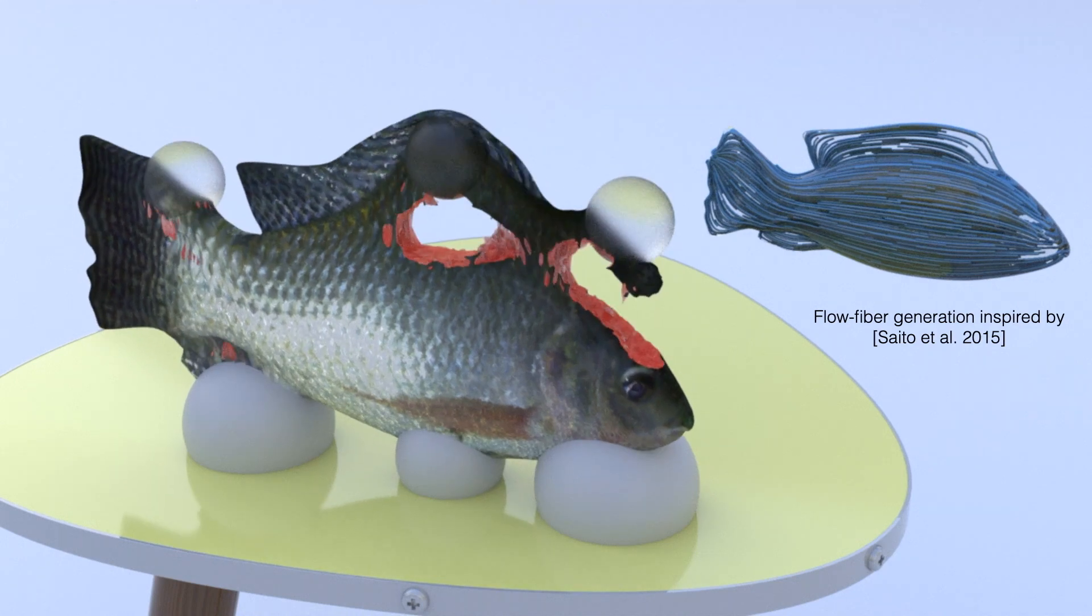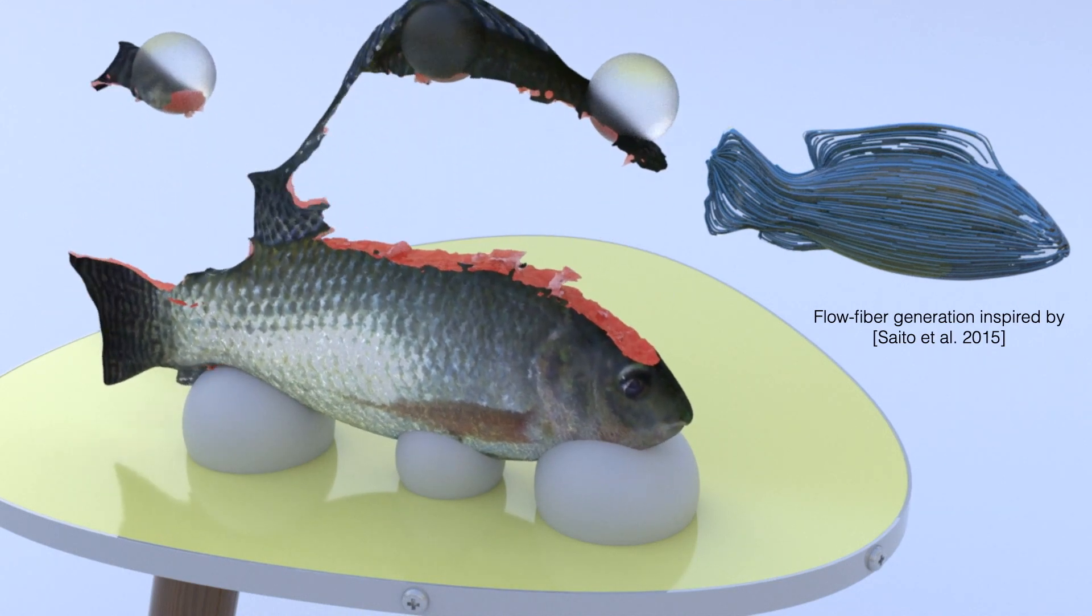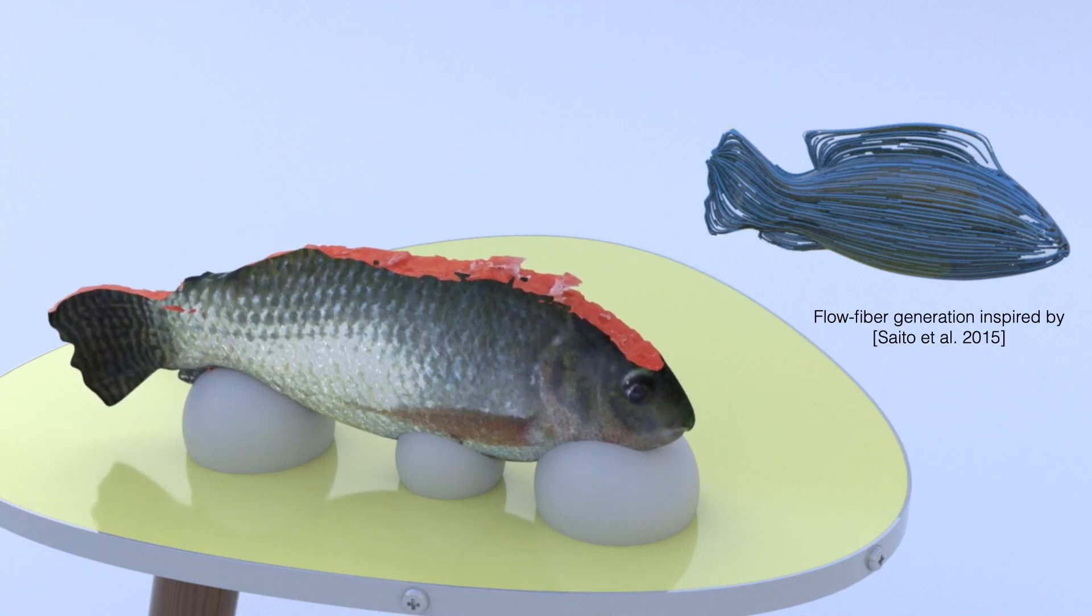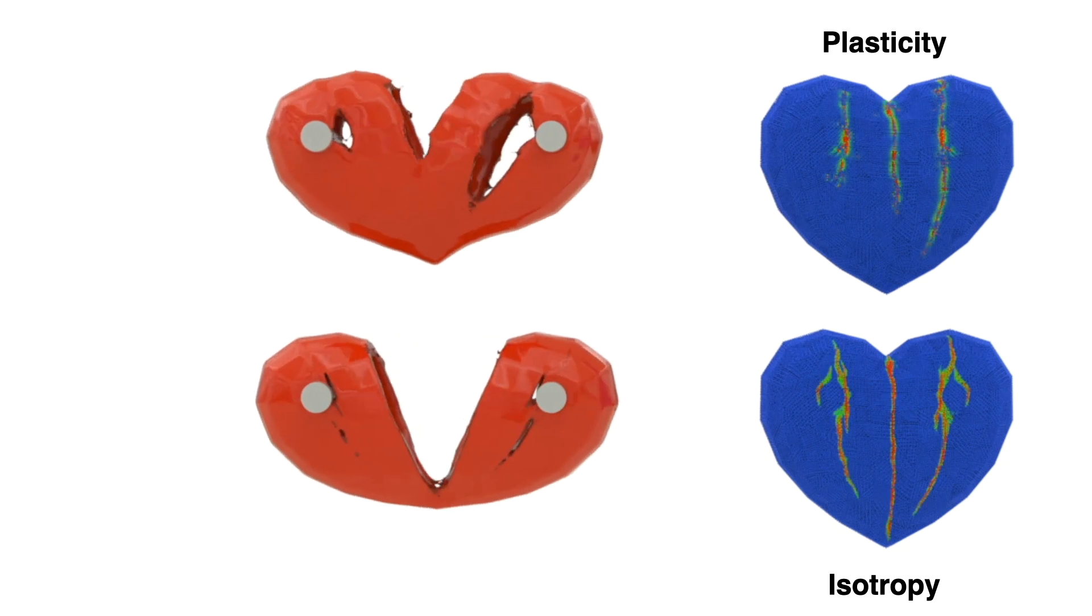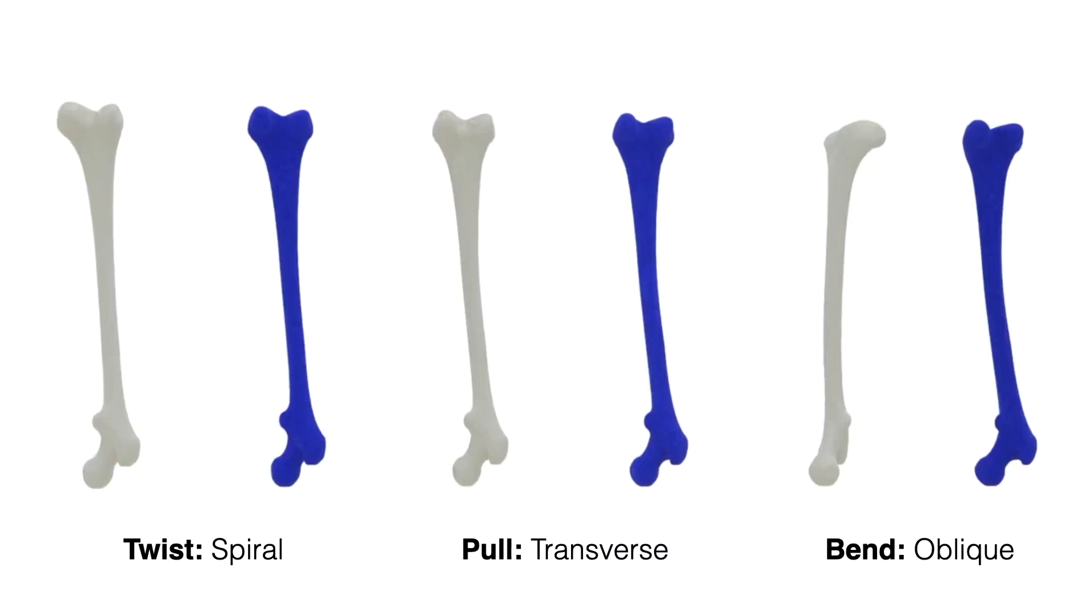Next, we're inspired by the flow fiber generation of Saito et al. 2015, and simulate water flowing through this fish to generate the contoured fibers you see at the right. And notice how as we skin the fish the fracture nicely follows this curvature. Next, we demonstrate aniso-MPM seamless pairing with plasticity as we break this little plastic heart. Next, we demonstrate a real world example by simulating some bone fractures. Twisting produces a spiral fracture, pulling causes a transverse fracture, and bending creates an oblique fracture.